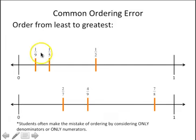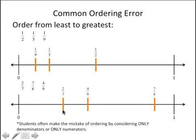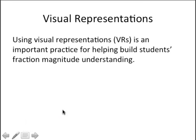In the first set — one-ninth, one-fifth, and one-half — we can clearly see that one-half is the largest fraction, one-fifth is smaller, and one-ninth is the smallest. For the second set, we see that seven-eighths is the largest, four-ninths is in the middle, and two-sevenths is the smallest. Like that number line representation, all types of visual representations are really helpful for building students' magnitude understanding and improving their performance with ordering, comparing, and all types of fraction skills.